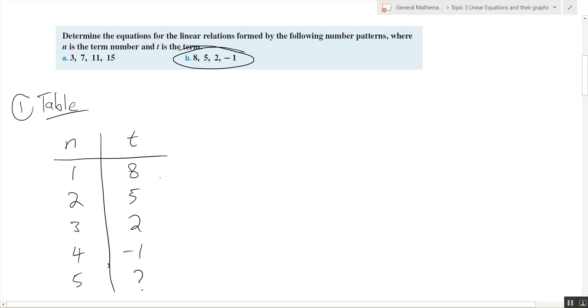We then do the change in T over the change in N. In previous linear equations, you know this as the rise over run. So it's negative three. Very good pick up there.